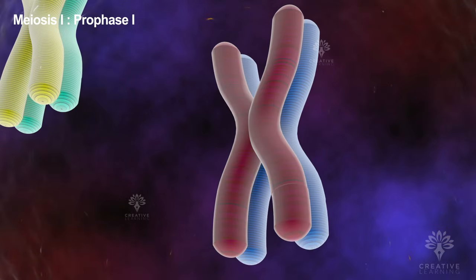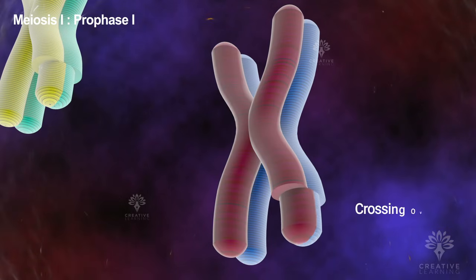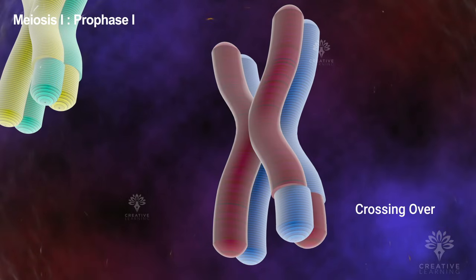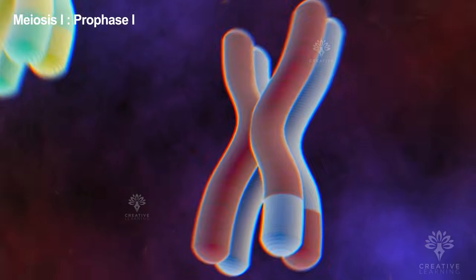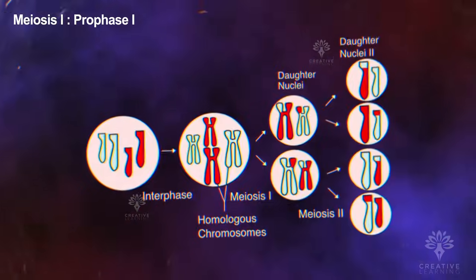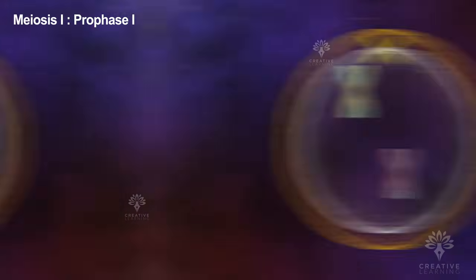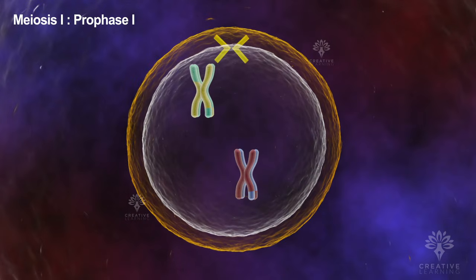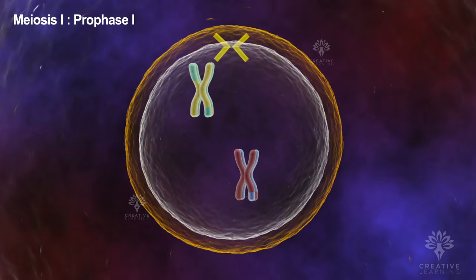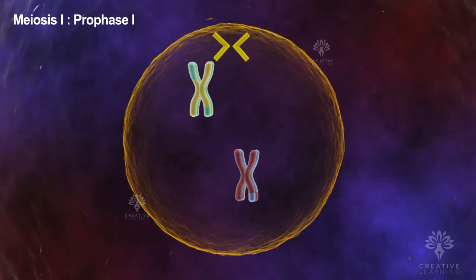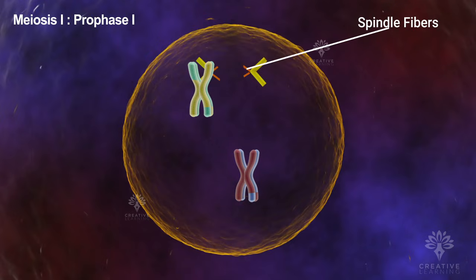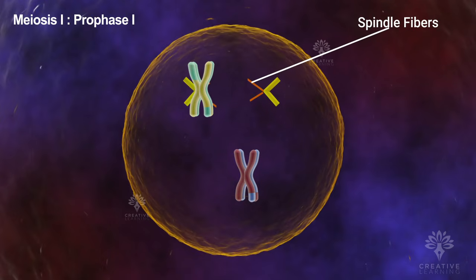The true magic now begins with crossing over. Segments of alleles swap across chromatids during this genetic exchange event, creating brand new gene combinations. As meiosis I progresses, the nuclear membrane vanishes and spindle fibers emerge, guiding the movement of chromosomes.